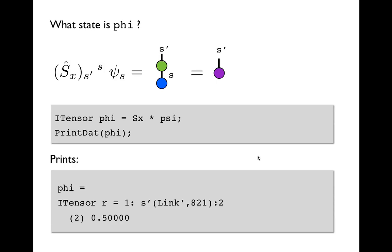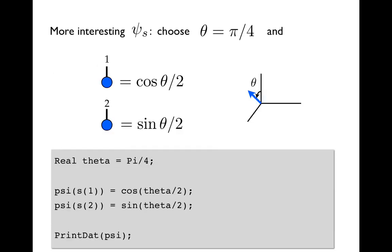Now what state do we get? Well you can think about it for a minute. If you act Sx on a wave function that's pointing up, Sx only has off diagonal elements so it should flip it. So we can check this by saving the result of Sx times psi and then calling printdat on it and seeing that sure enough, now only the second component is non-zero. So the spin that was pointing up now is pointing down. Notice again also that it has the s prime index as we predicted from following the diagram.